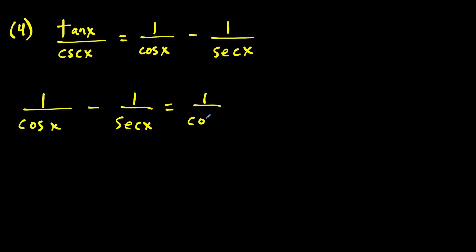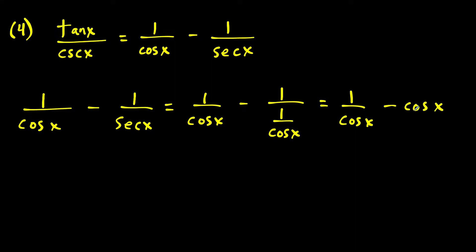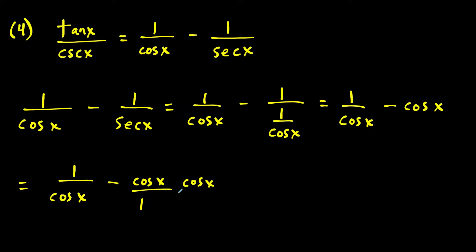The first thing I try is swapping out secant x with one over cosine x. That way, one over (one over cosine x) simplifies to just cosine x. So we have one over cosine x minus cosine x. Then I rewrite the cosine x as cosine x over one, and multiply the second fraction by cosine x over cosine x so that both fractions have the same denominator.